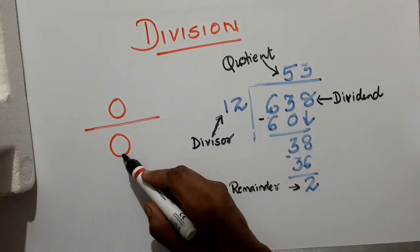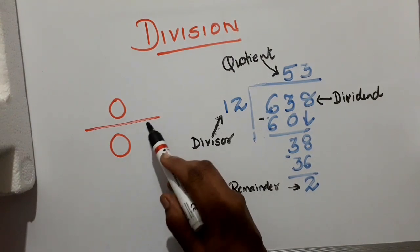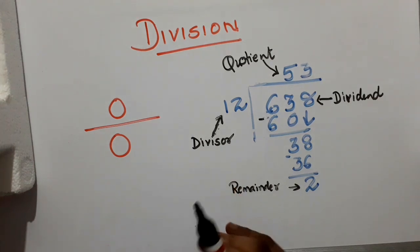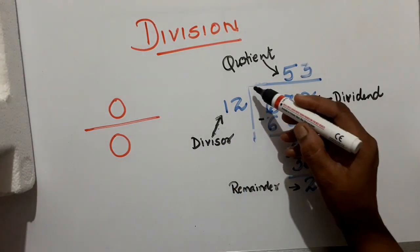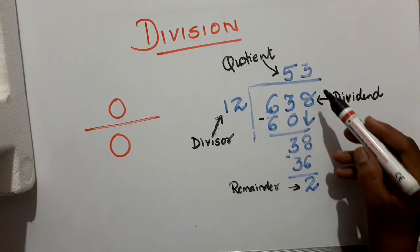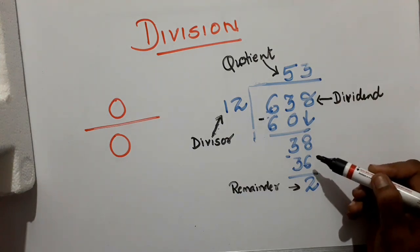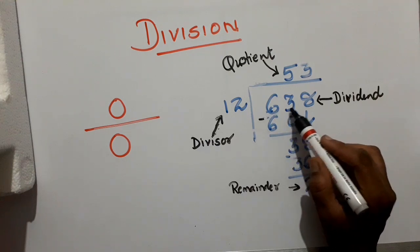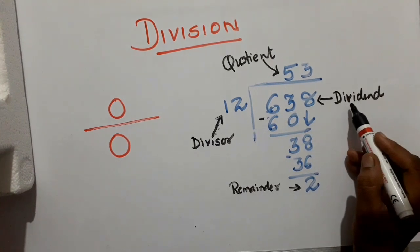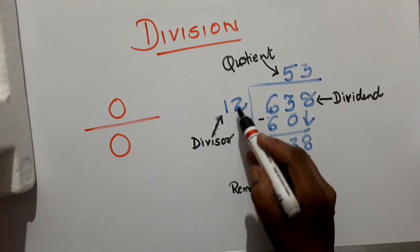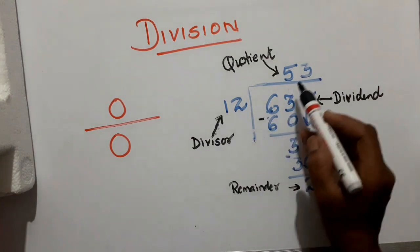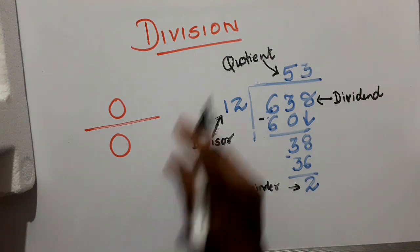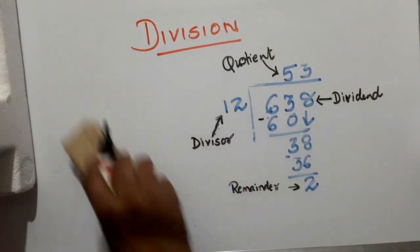The two dots and a line help me to be fair always. Here you can see one division question where 638 is the dividend, 12 is the divisor, 53 is the quotient, and the remainder is 2.